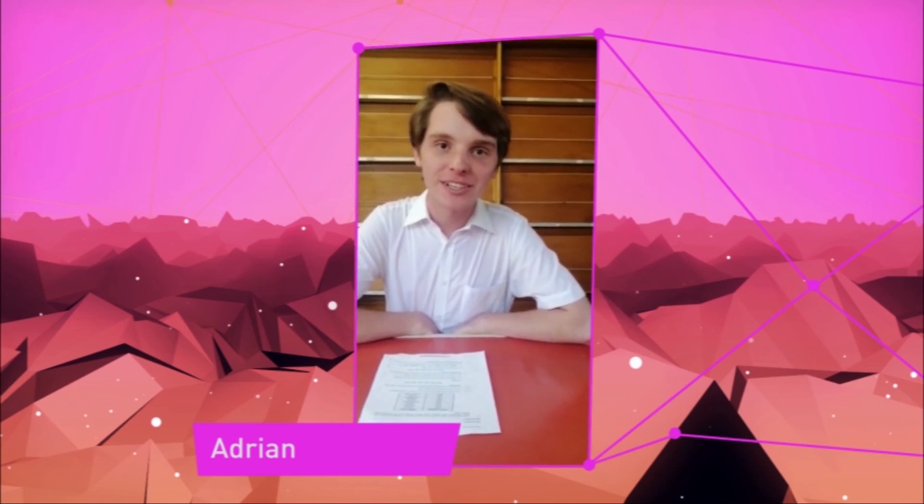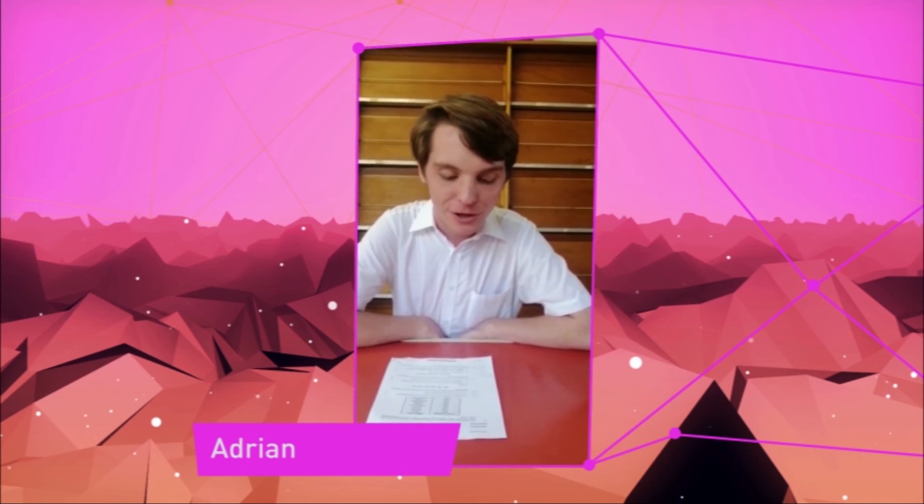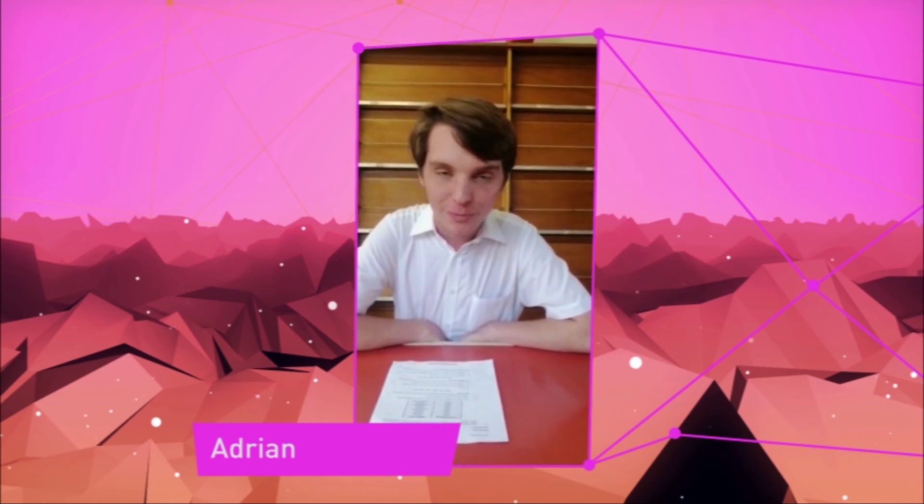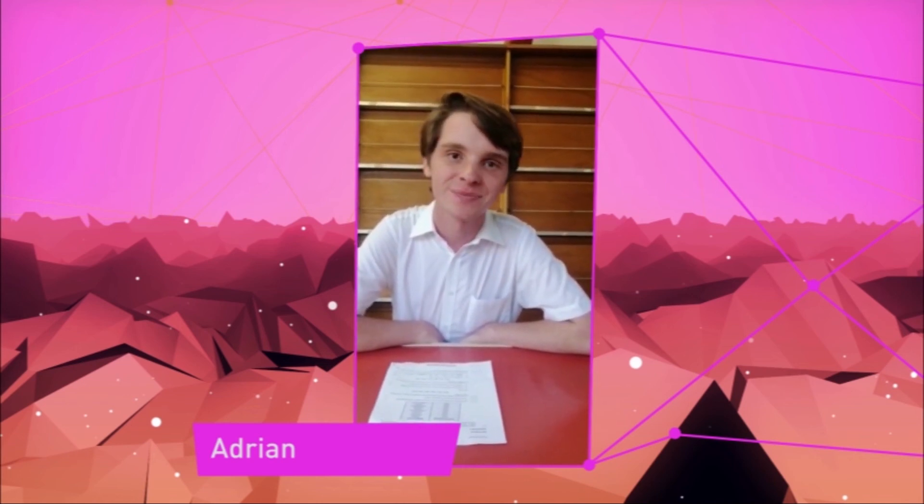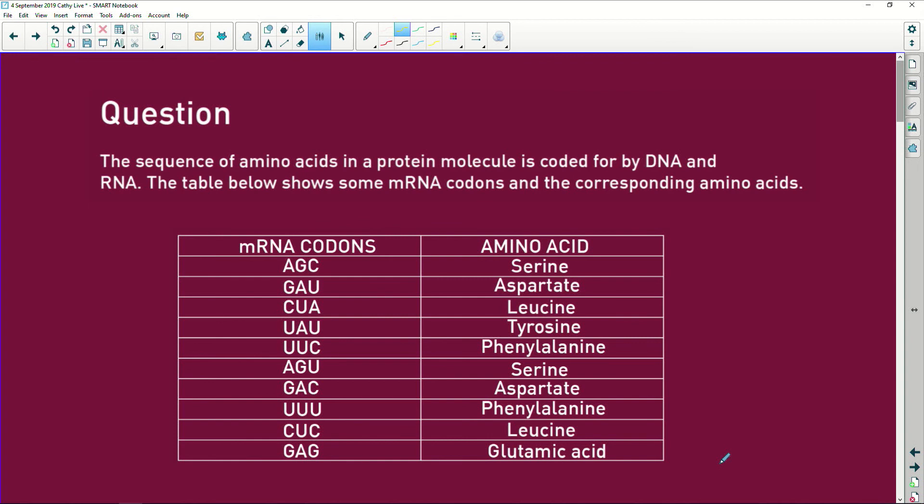Hi Kathy, my name is Adrian. I'd like you to help me on Life Sciences 2017 Paper 2, Question 2.1 on protein synthesis. The sequence of amino acids in a protein, because amino acids make proteins, is coded for by the DNA because that's your recipe that sits in your DNA and RNA.